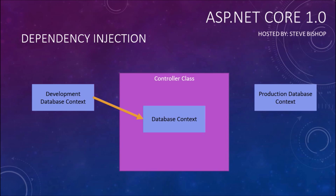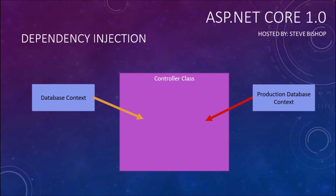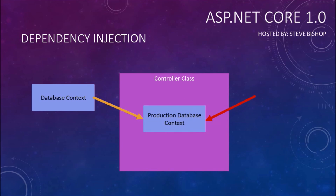But since we hard-coded the database context into the controller class, we can't just simply replace it. We can replace it, but that whole replacement process means we've got to go through all the lines of code in our controller class and find all of the instances where we've been basing our code off of that database context and replace it now with the production database context. And that's a big hassle — that's a lot of stuff you've got to try to find and clear out.